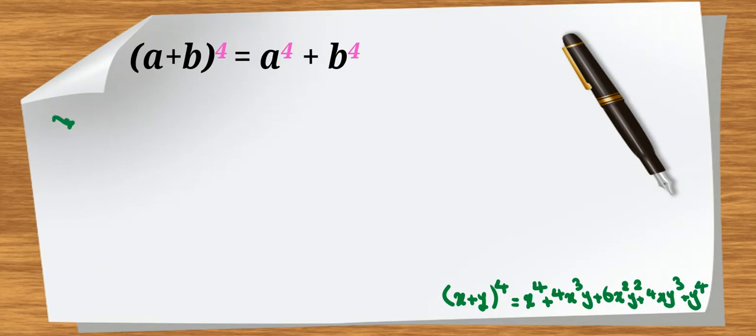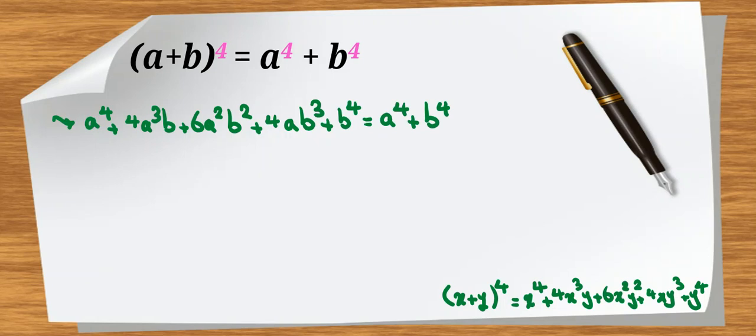And if you apply it here, left-hand side will be a to the 4 plus 4a cubed b plus 6a squared b squared plus 4ab cubed plus b to the 4 equal to a to the 4 plus b to the 4. Okay, now we have a to the 4 on both sides and also b to the 4 on both sides.